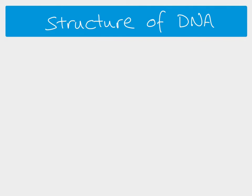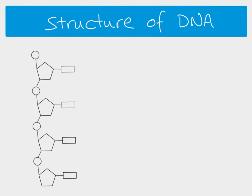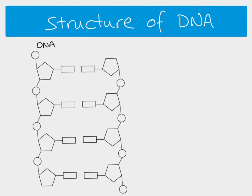Let's look at the structure of DNA. DNA is a polymer of nucleotides joined together by phosphodiester bonds. DNA is a double-stranded molecule — we have two molecules of DNA, and it forms a double-helix structure. These two molecules are bonded together with hydrogen bonds between the bases. If we have C on one strand, we have to have G on the other because they are complementary to one another. A pairs with T, and G pairs with C — these are complementary base pairs.